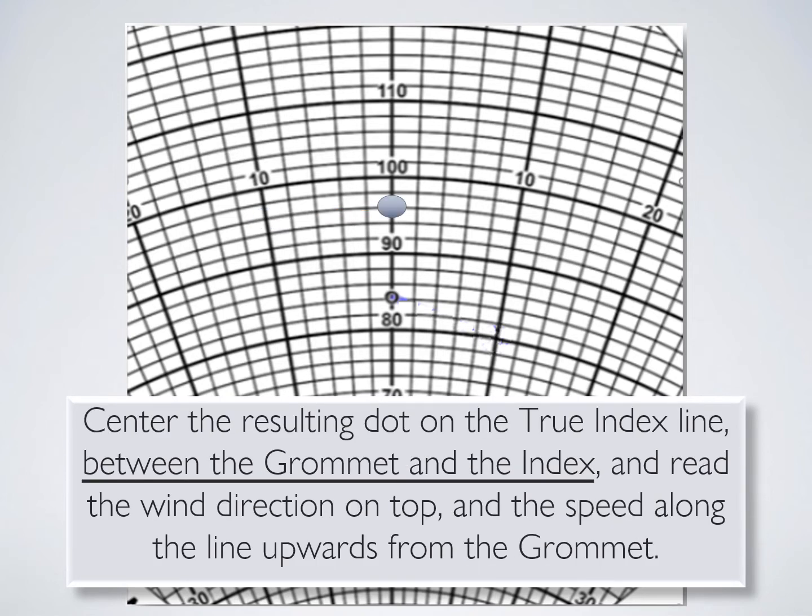Then I would rotate the inner circle to make sure that the pen mark lines up vertically with the triangle at the top. And I would read the wind direction off the triangle. And I would read the wind intensity from the grommet up to the pen line in knots.